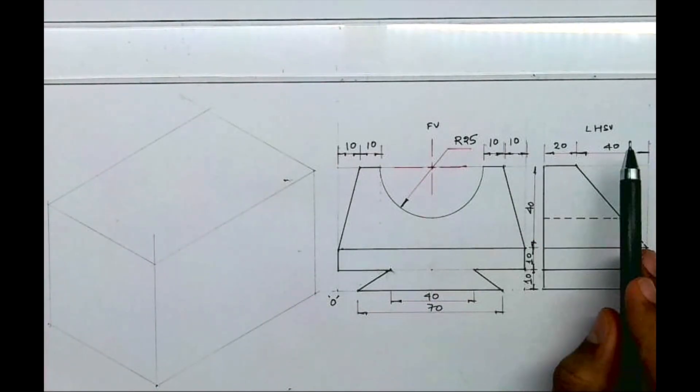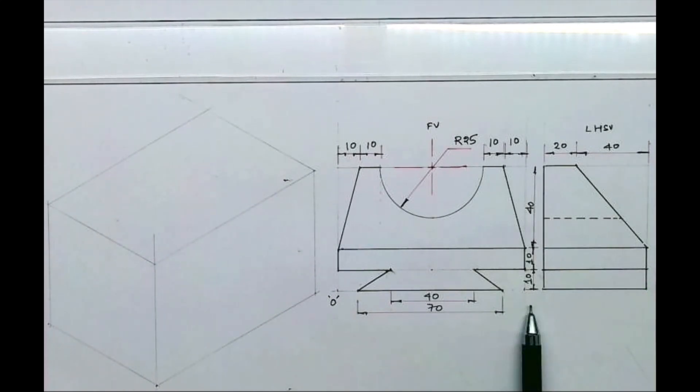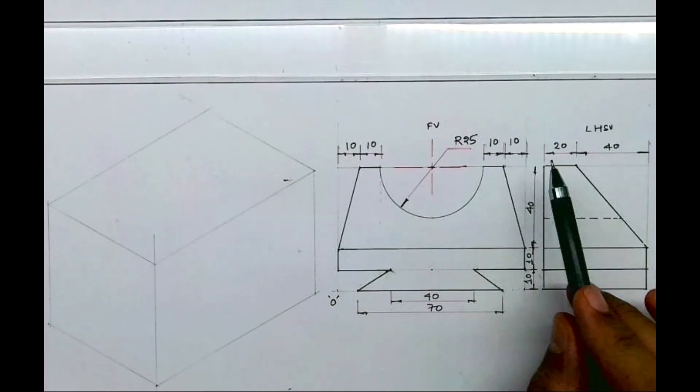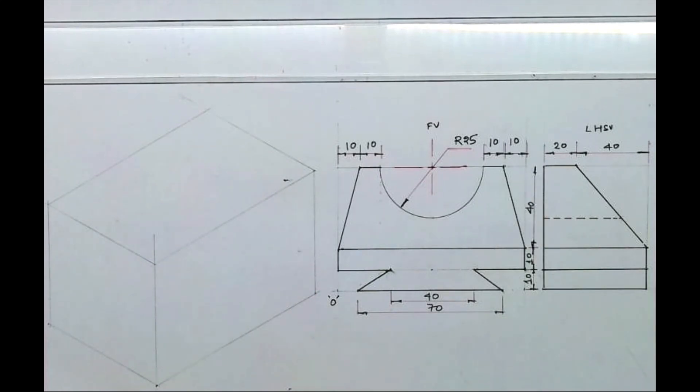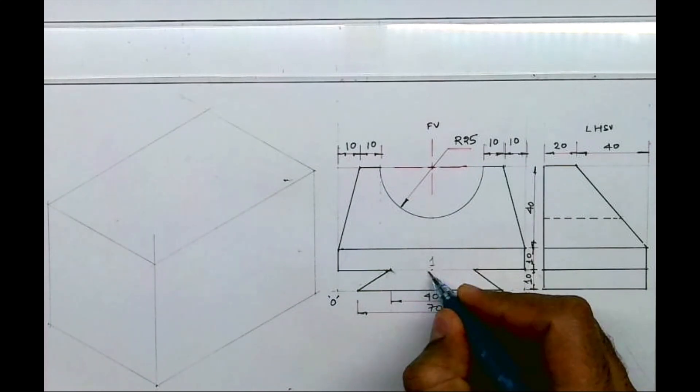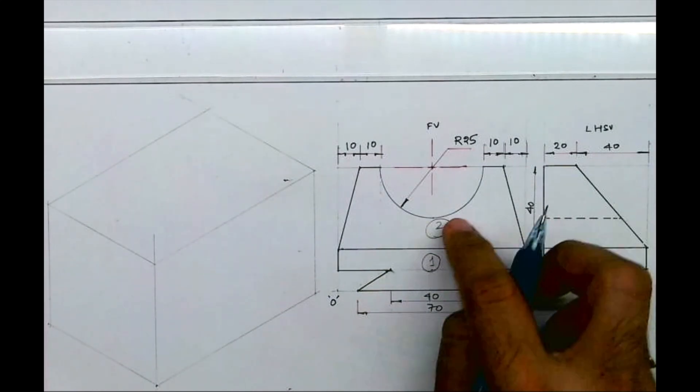Welcome to technical drawing. Today we'll do this isometry. Front view side is given, right side is 90, height is 60, and width is 60. So first we will draw the layout. After drawing the layout, we'll see how many parts are there. There are two parts: part one and part two.